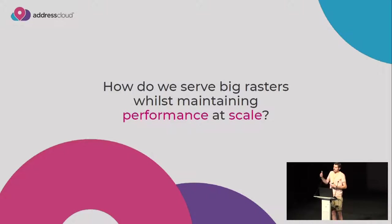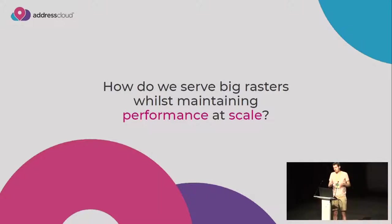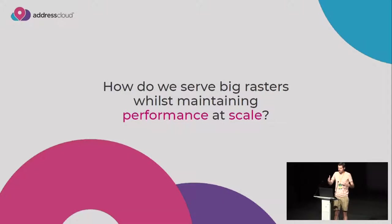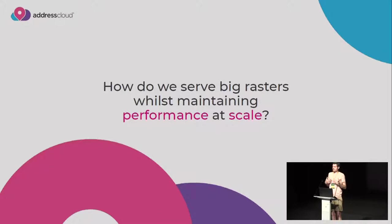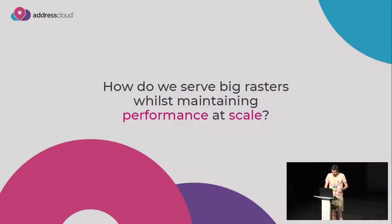When some of our clients connect to our system, they may be competing in real time against other vendors. In the UK we have aggregator websites — if you go to get house insurance on something like Compare the Market, you see a range of prices coming back in real time. When an insurer asks us about the risk at a point in space, we need to respond very, very quickly — typically sub one second. I have to do GIS with really big, high-resolution data, but do it really, really quickly. That's my day job.